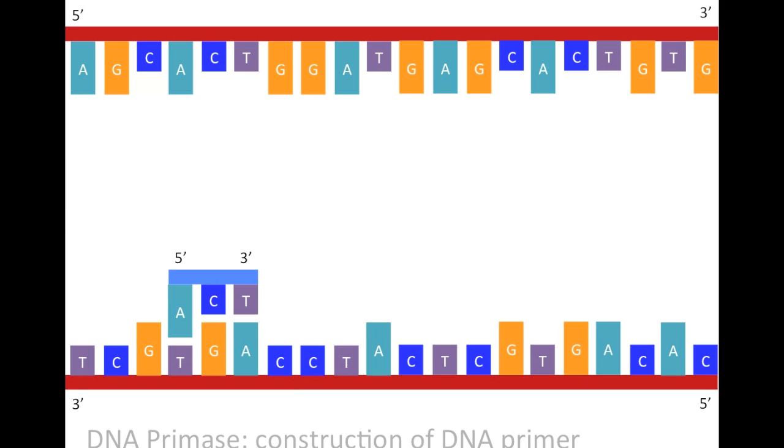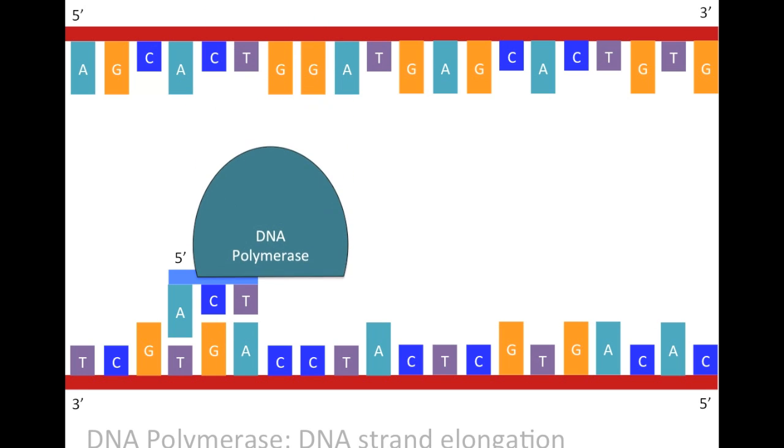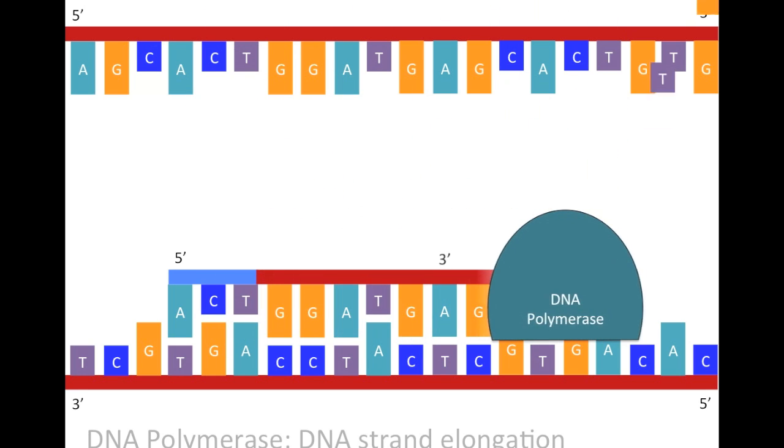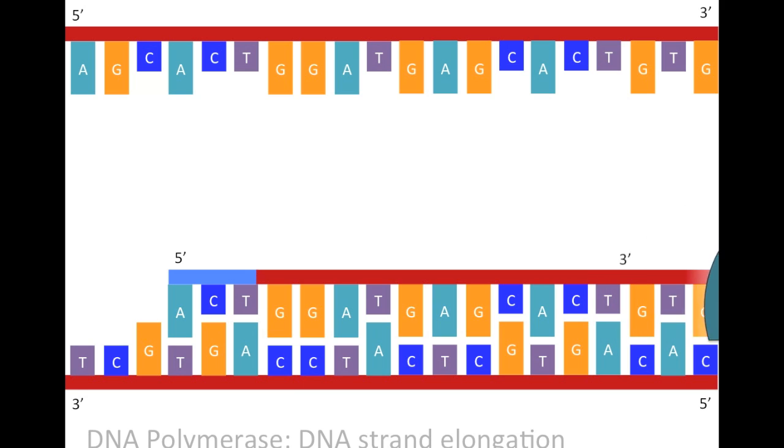Now that DNA primase has established a DNA primer built off of the original DNA strand, DNA polymerase can begin to elongate the new DNA sequence. It will bind to the 3' end of the DNA primer and extend, building off of that 3' end, the new DNA strand. As it goes, free nucleotides from the cell will be incorporated into the new DNA sequence. A new strand of DNA has been built and a new double helix established.